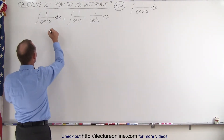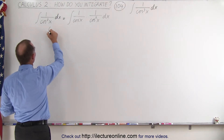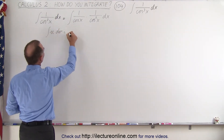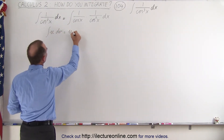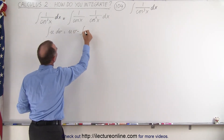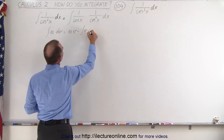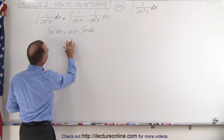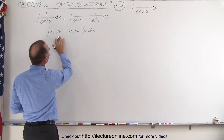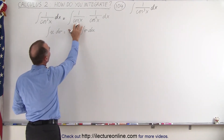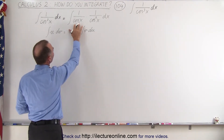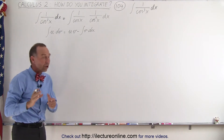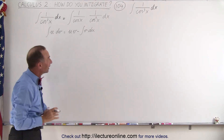Remember, integration by parts works as follows. If we have u dv, that's equal to u times v minus the integral of v du. So we have to identify the u and the dv. If we let u equal 1 over the cosine of x and dv the remainder, we can actually solve that integral.